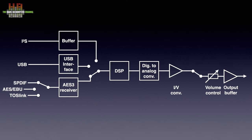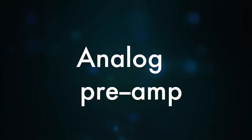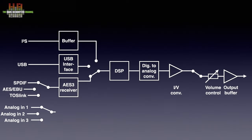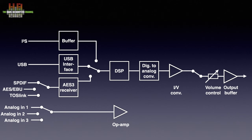Let's get back to the oversampling DAC and see how an analog preamp section fits in. If there are analog inputs on a DAC, there is an input selector followed by a buffer amplifier circuit. The signal is then sent to a selector that, when set to analog, continues through the volume control, after which it is buffered again and sent to the output. In some cases there is a phono input as well, in which case another amplifier stage — this time with RIAA correction — needs to be added.